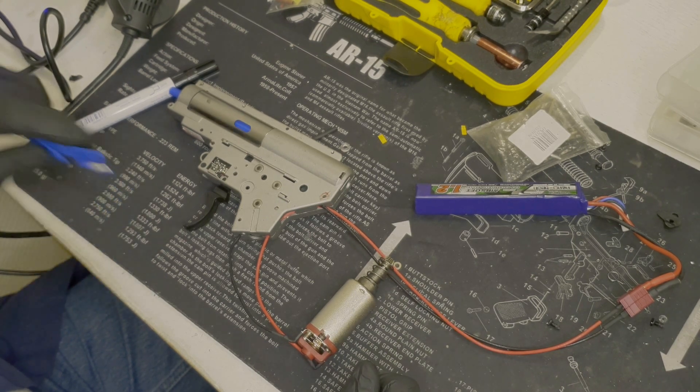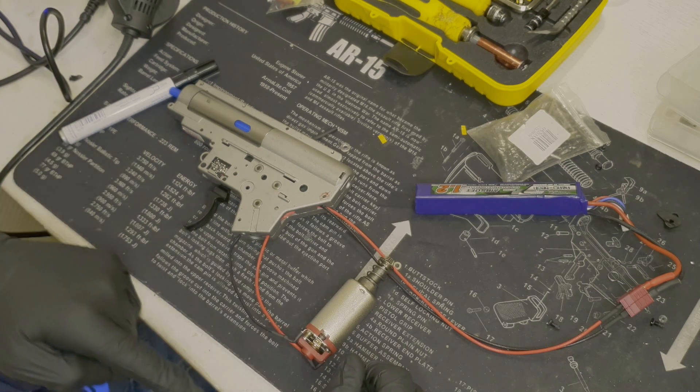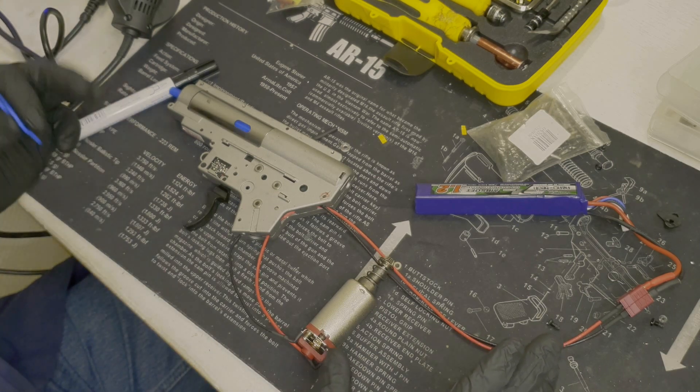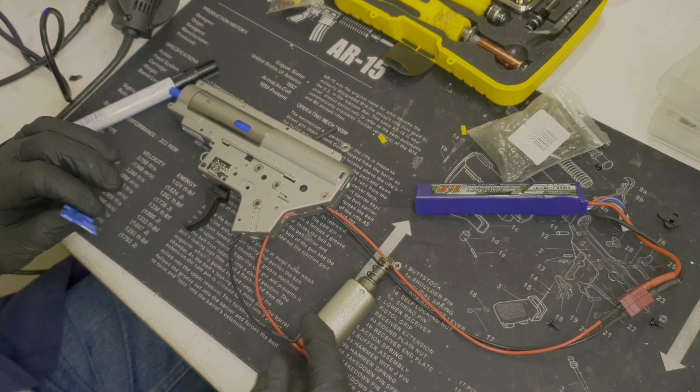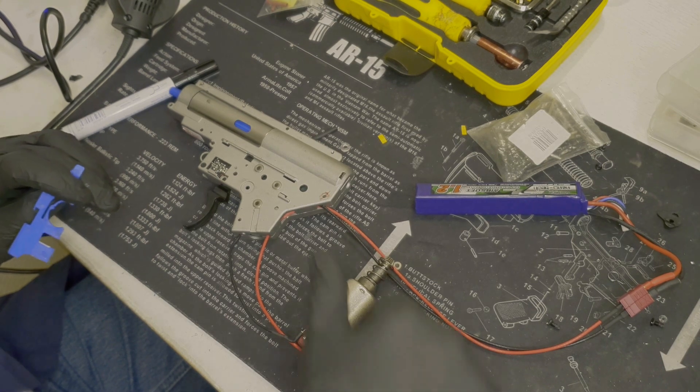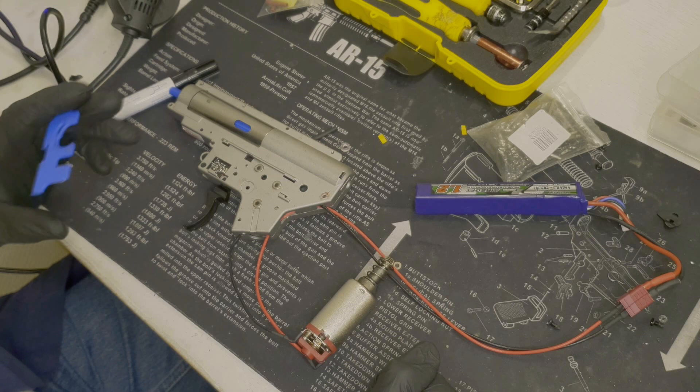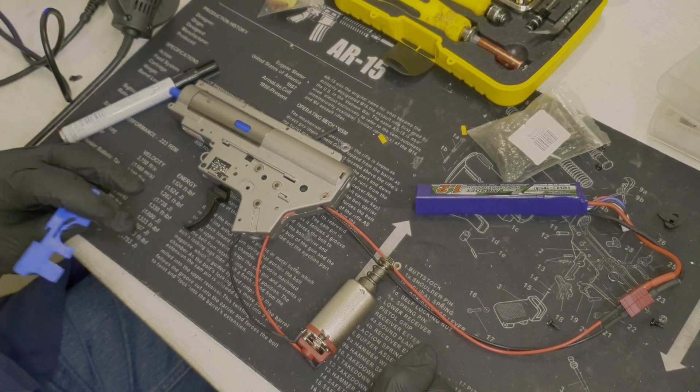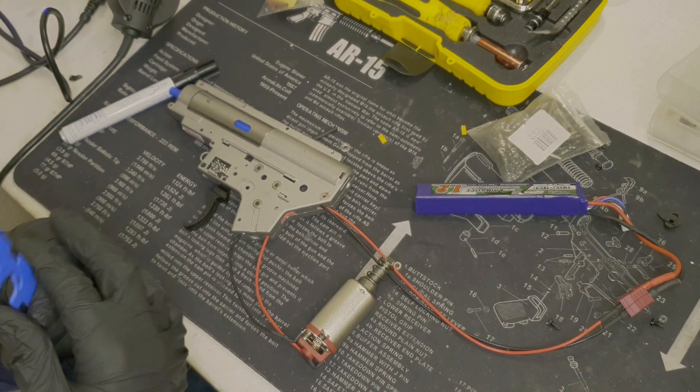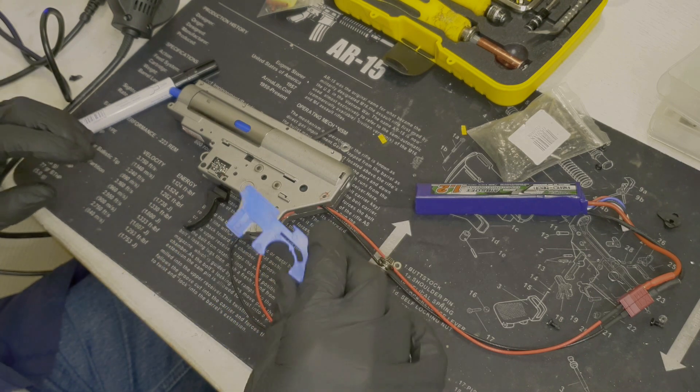Do not, and I repeat, do not pull the trigger while the motor is out of the grip or motor cage because it will spin like crazy and you get a small heart attack. So definitely don't pull the trigger unless you want to test it, but keep the motor firmly, otherwise it will jump around the table and it gives you quite a scare.